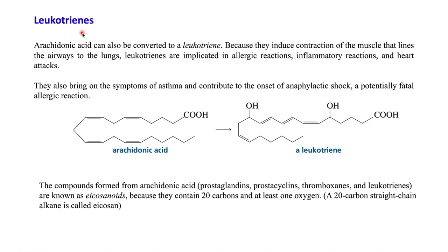Leukotriene synthesis also happens from arachidonic acid. Leukotrienes perform contraction of muscle, including contraction of the lungs, and they perform several allergic inflammatory reactions, sometimes also causing heart attacks. Leukotrienes also bring about symptoms of asthma and contribute to the onset of anaphylactic shock, which is a very fatal allergic reaction.